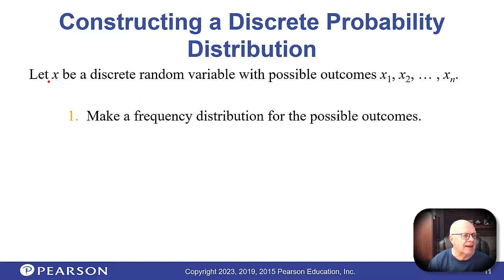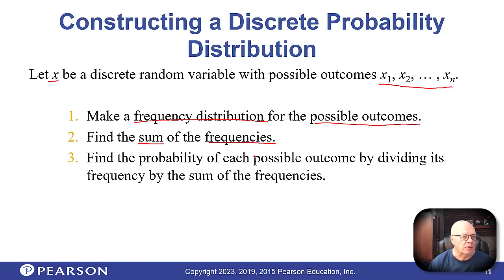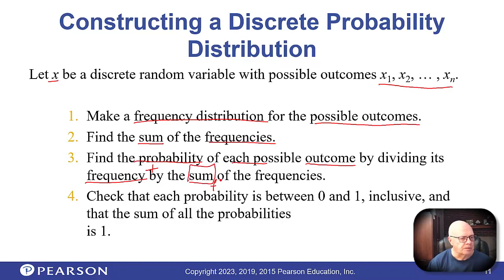Let X be a discrete random variable with N possible outcomes. To make a probability distribution, first make a frequency distribution for those possible outcomes. Then find the sum of the frequencies. Find the probability for each outcome by dividing the frequency by the sum of the frequencies. Make sure every probability is between zero and one, and that the sum of all probabilities equals one.